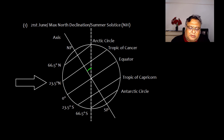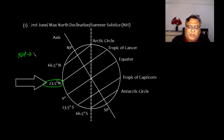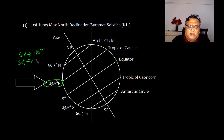The earth is tilted accordingly. When the sun's rays fall at the Tropic of Cancer — approximately 23.5° north latitude — the northern hemisphere is more exposed to direct sunlight and will be quite hot, while the southern hemisphere, being further away from the sun, will be relatively cold.